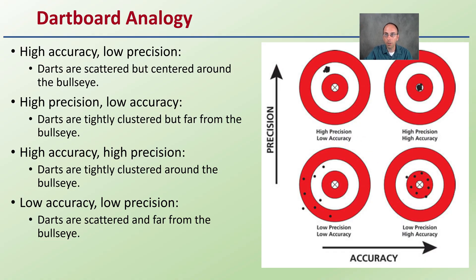So we use the dartboard analogy, and you might see this quite a bit here, of high accuracy, low precision, high precision, low accuracy, so on and so forth. Here we've got low accuracy, low precision. The darts are basically scattered and far from the bullseye entirely.